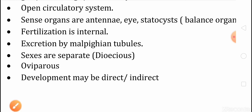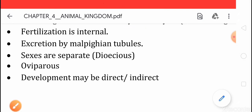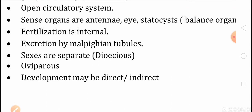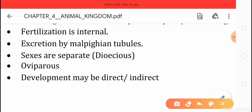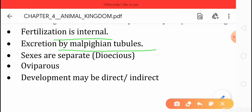They also have sense organs like antennae, eyes, and statocysts. These organs are also called balance organs — by the use of these organs they can sense and respond to stimuli. Fertilization in Arthropoda is internal, and excretion is carried out by Malpighian tubules, which are the excretory structures developed in arthropods.